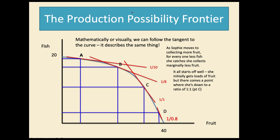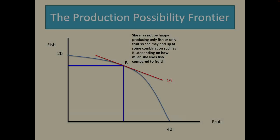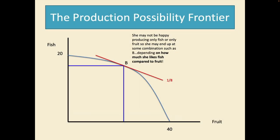She may not be happy producing only fish or only fruit of course. So she may end up at some combinations such as B. And this depends on how much she likes fish compared to fruit in the background. We don't describe this on the production possibility frontier but we can do later on in microeconomics usually at the undergraduate level. Our focus is purely on the production side and we're assuming that her preferences are given to us and at point B she's a happy person.